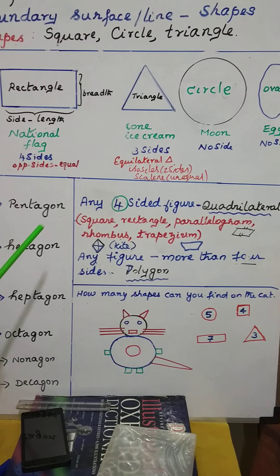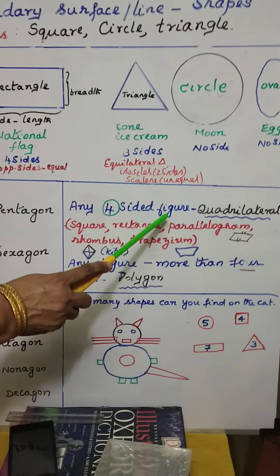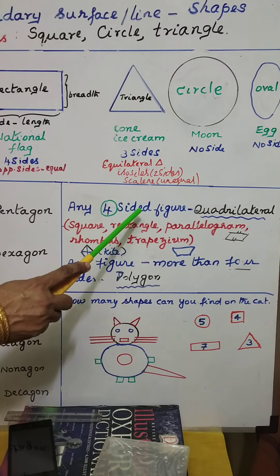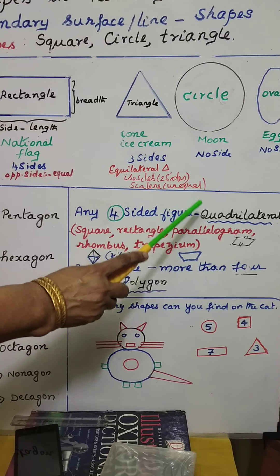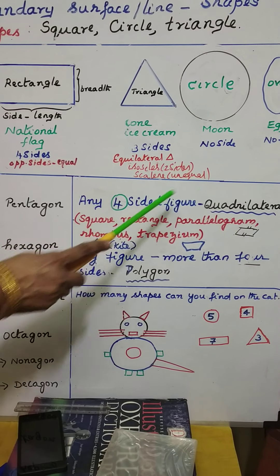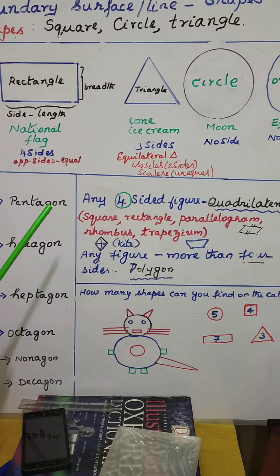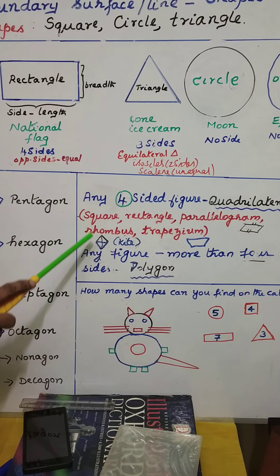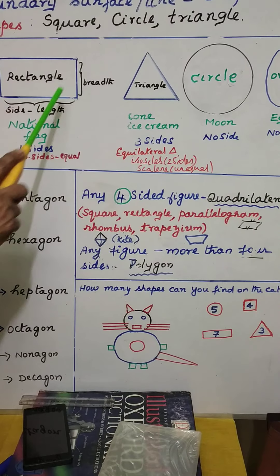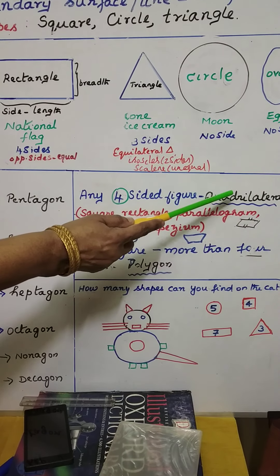Any four-sided figure in geometry we can call a quadrilateral. Already we have seen four-sided figures — can you recollect? Yes, they are square and rectangle. Square and rectangle are four-sided figures, so the square and rectangle are also called quadrilateral.